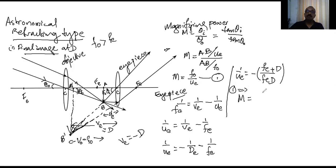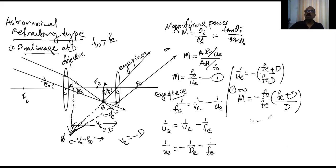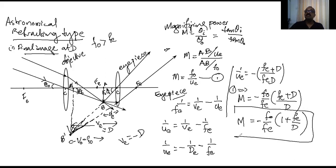Substituting back into equation 1, the magnifying power M equals f_o multiplied by (−(f_e + D)) / (f_e × D), which simplifies to M = −(f_o / f_e) × (1 + f_e/D). This is the final equation for magnifying power of an astronomical refracting telescope when the final image is at the least distance for distinct vision D.